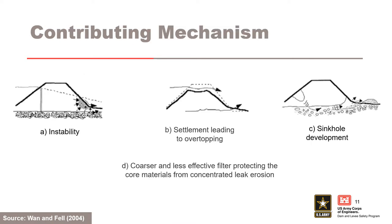We are not aware of any case histories leading to breach. Therefore, suffusion is considered a secondary mechanism that can lead to one of the primary processes of internal erosion. Suffusion first results in an increase in permeability, greater seepage velocities, and under potentially higher hydraulic gradients, an accelerating rate of suffusion. It can then lead to transport of substantial amounts of fines that may cause clogging and occasionally hydraulic fracture.